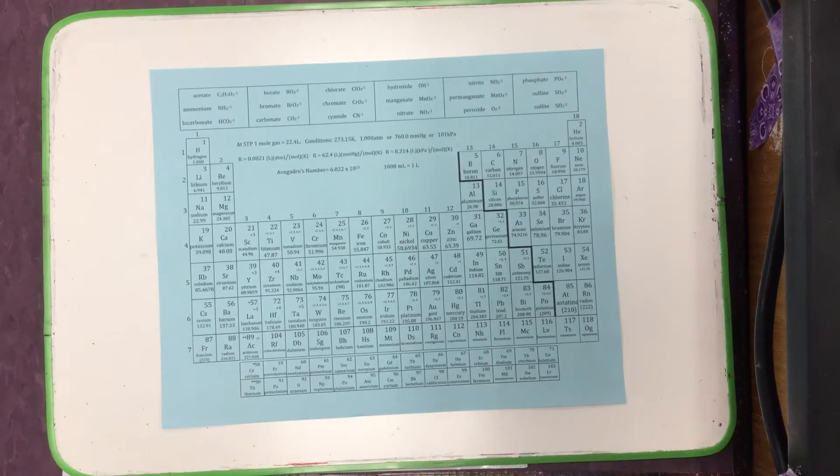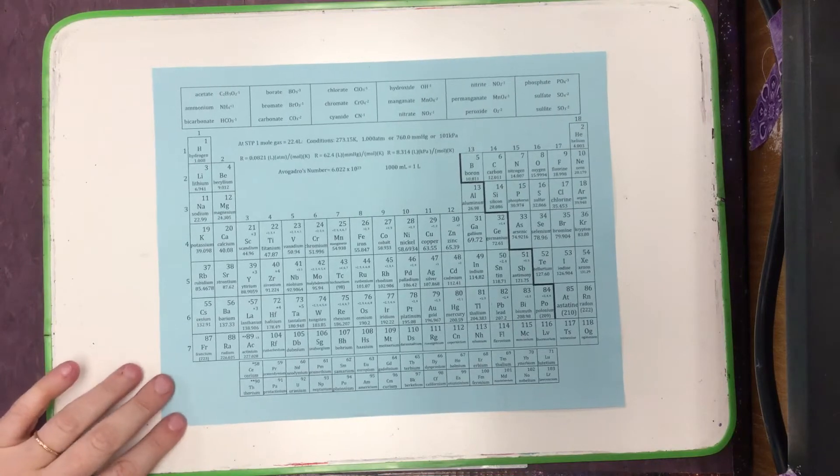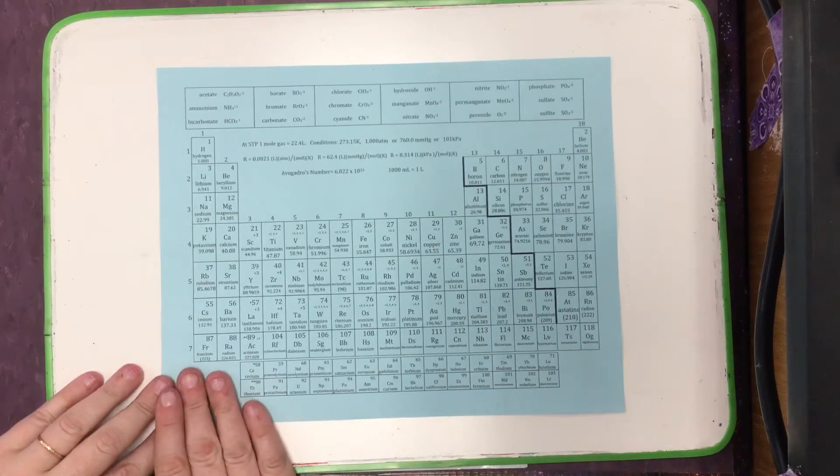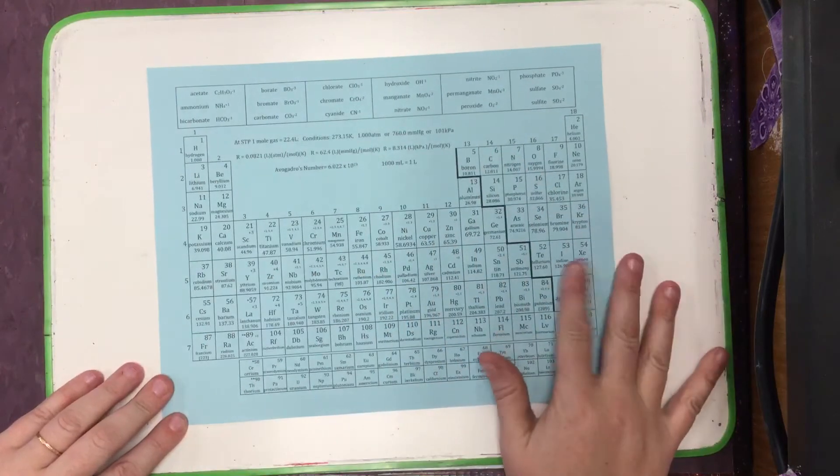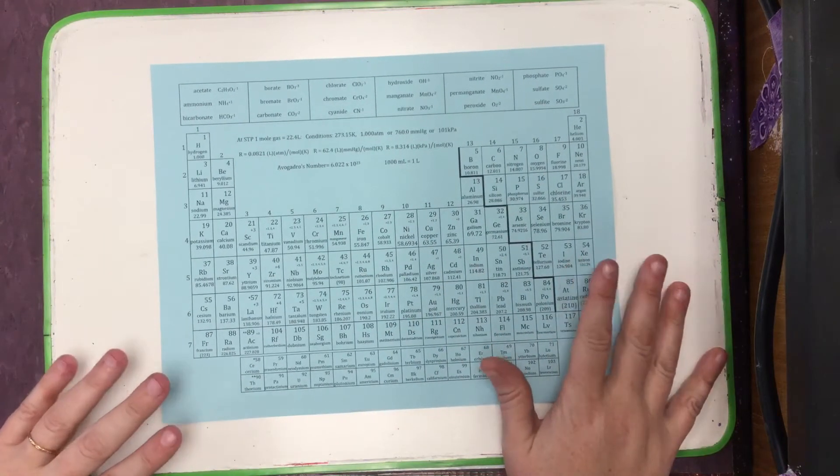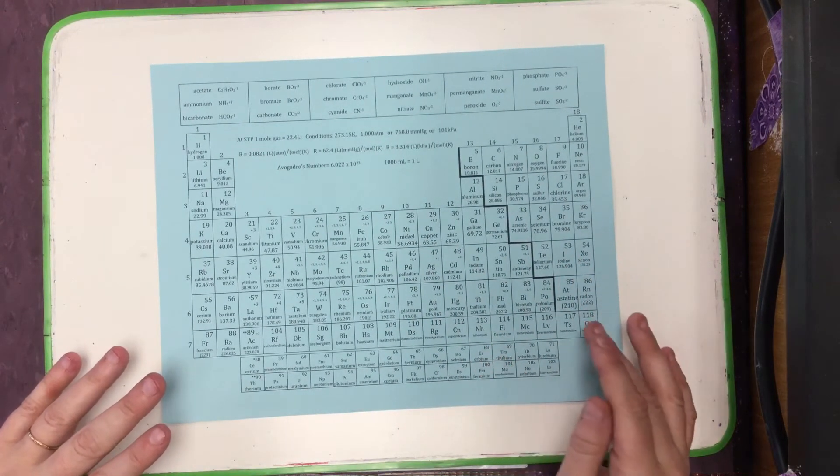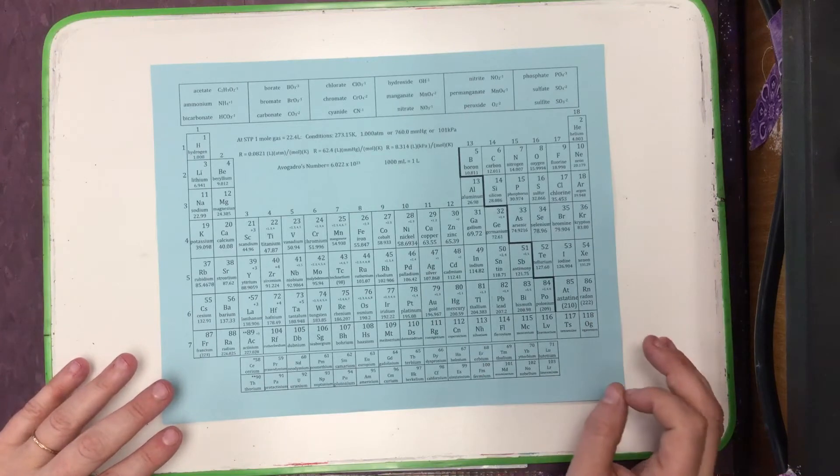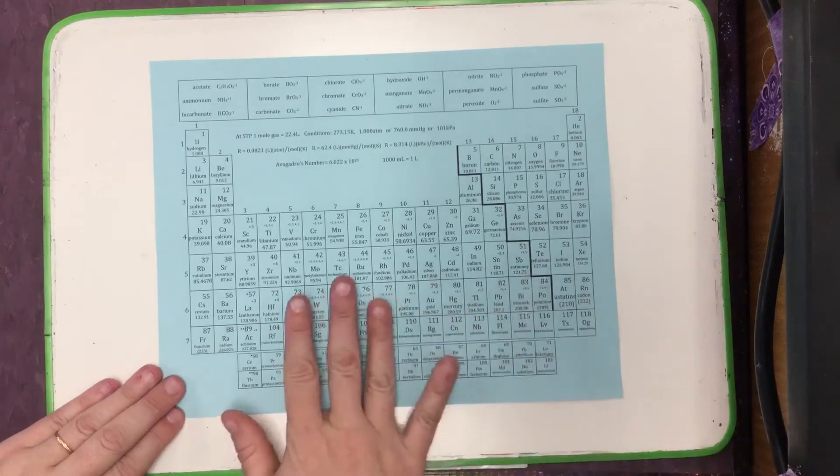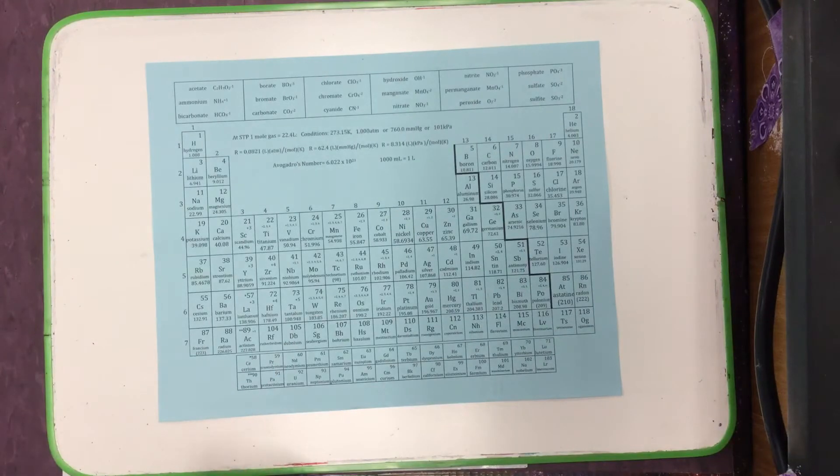In today's lesson we're going to continue our discussion of shorthand orbital notations and electron configurations. We're going to see how these can be predicted based on our periodic table, and then we're also going to look at new properties, things like unpaired electrons and valence electrons, and how they can also be predicted based on our periodic table.